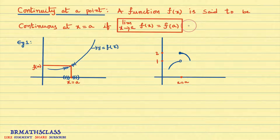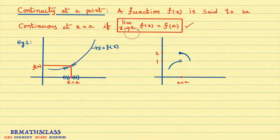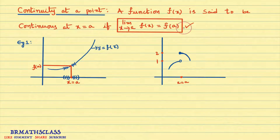It is a little difficult to understand. In class 1 of continuity, I did a video on the limit of a function — that is very, very important to understand this class. When we say the function is continuous at x equal to a, it means: if limit x tends to a of f(x) equals f(a), then the function is continuous at x equal to a. We will try to understand this with examples.